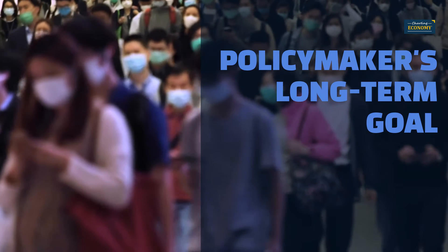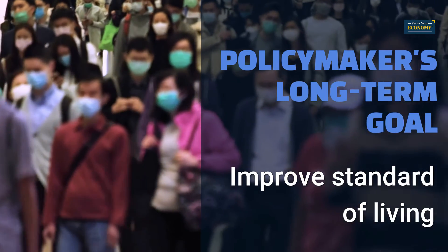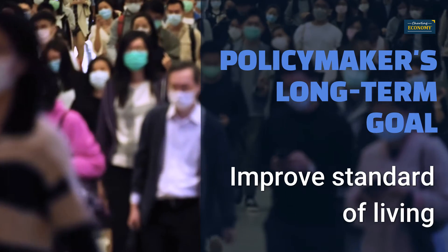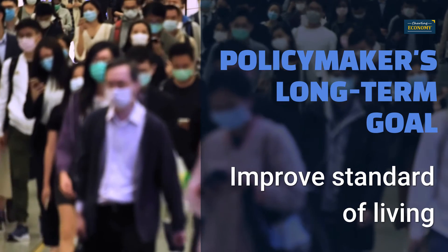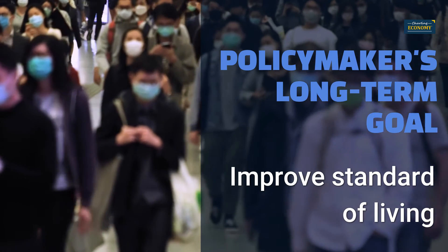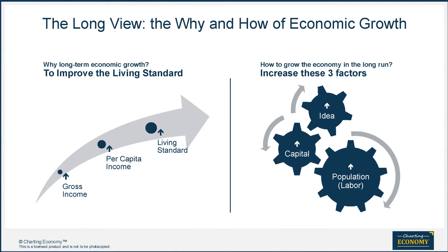To understand the economy, we have to know the objective. Economic policymakers' long-term goal is to improve the country's standard of living and its population's well-being. Without economic growth, the standard of living does not improve, as had been the case in most countries before the Industrial Revolution. A simple formula for long-term economic growth dictates that you have to increase these three factors: labor, capital, and idea. That's the job of policymakers.